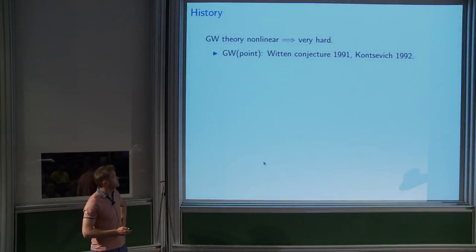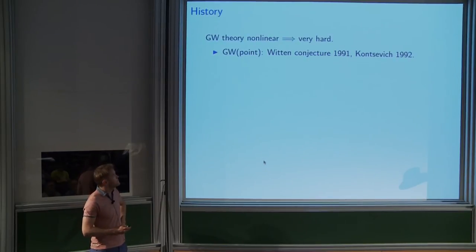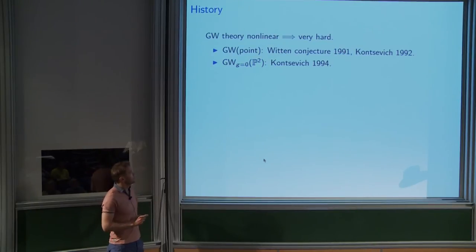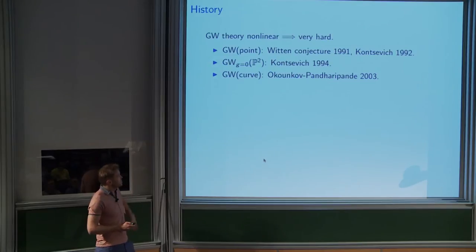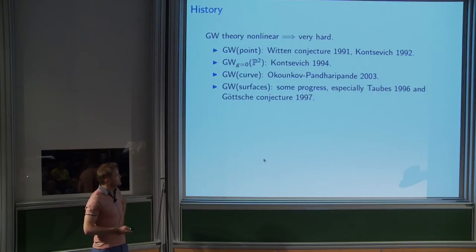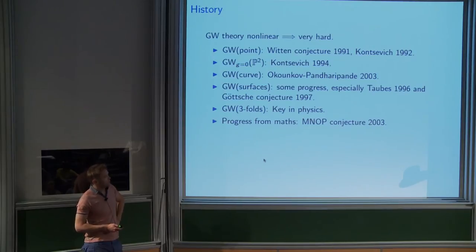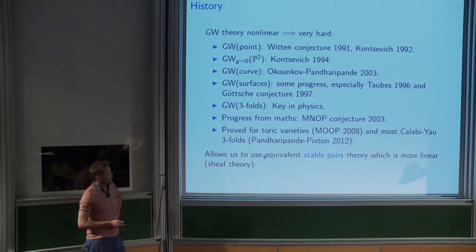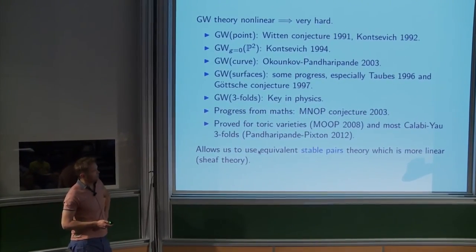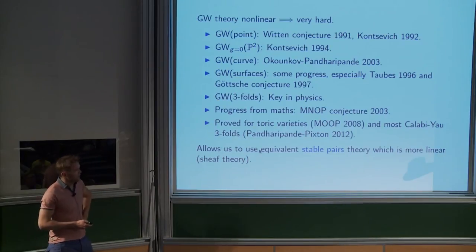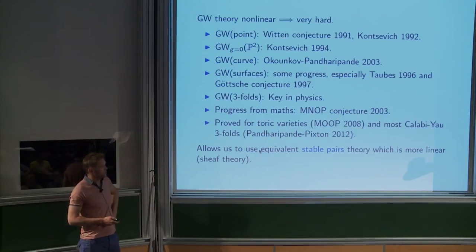In particular, you need two Fields Medalists to sort it out just for a point — the theory of mapping curves to a point. It was also worked out by Maxime for P2 just in genus zero. It's since been worked out for a curve, so we now know how many curves there are in a curve by Kontsevich-Pandharipande. There's some understanding of surfaces due to Taubes and the Göttsche conjecture, but really what we want to understand is Gromov-Witten theory of threefolds.